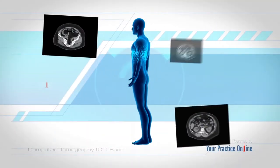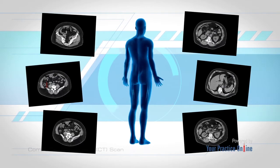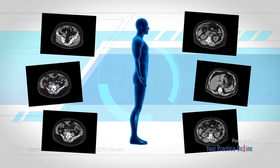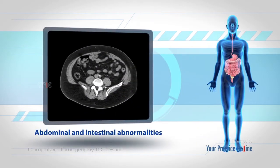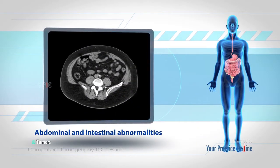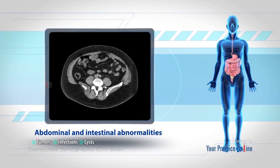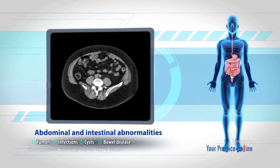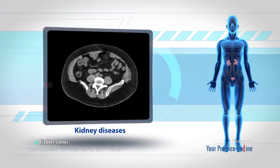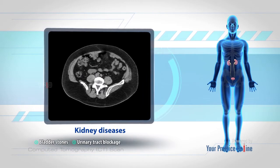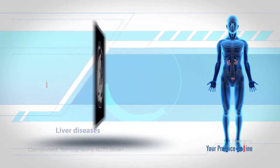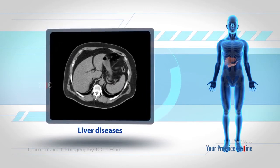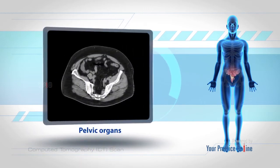CT scan images allow the doctor to look at the inside of the body and are usually recommended to help diagnose various conditions, including abdominal and intestinal abnormalities such as tumors, infections, cysts, fluid-filled sac-like structures, and bowel disease; kidney and bladder stones; urinary tract blockage or other urinary tract diseases; liver diseases and inflammation of the pancreas; and problems of the pelvic organs.